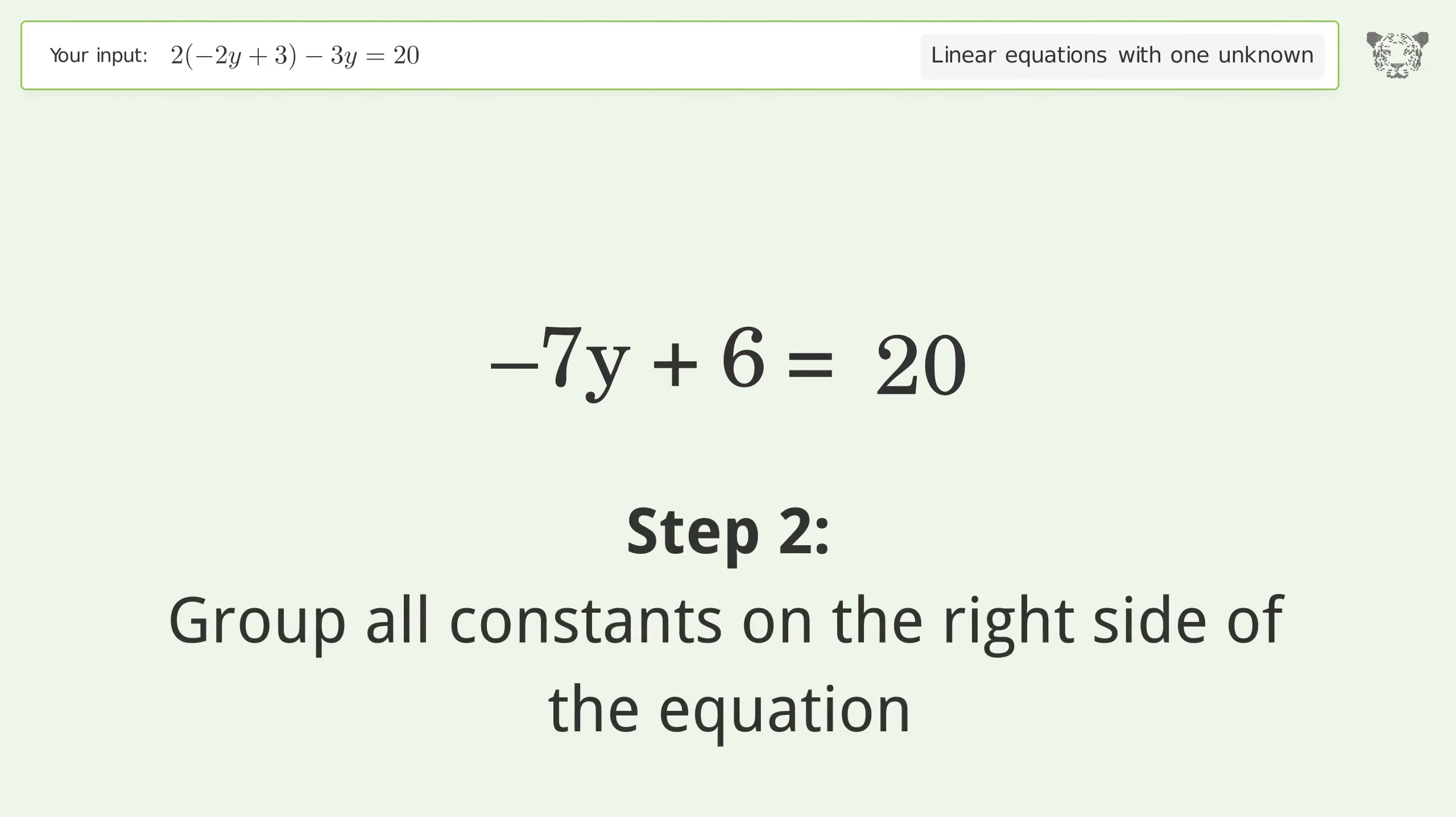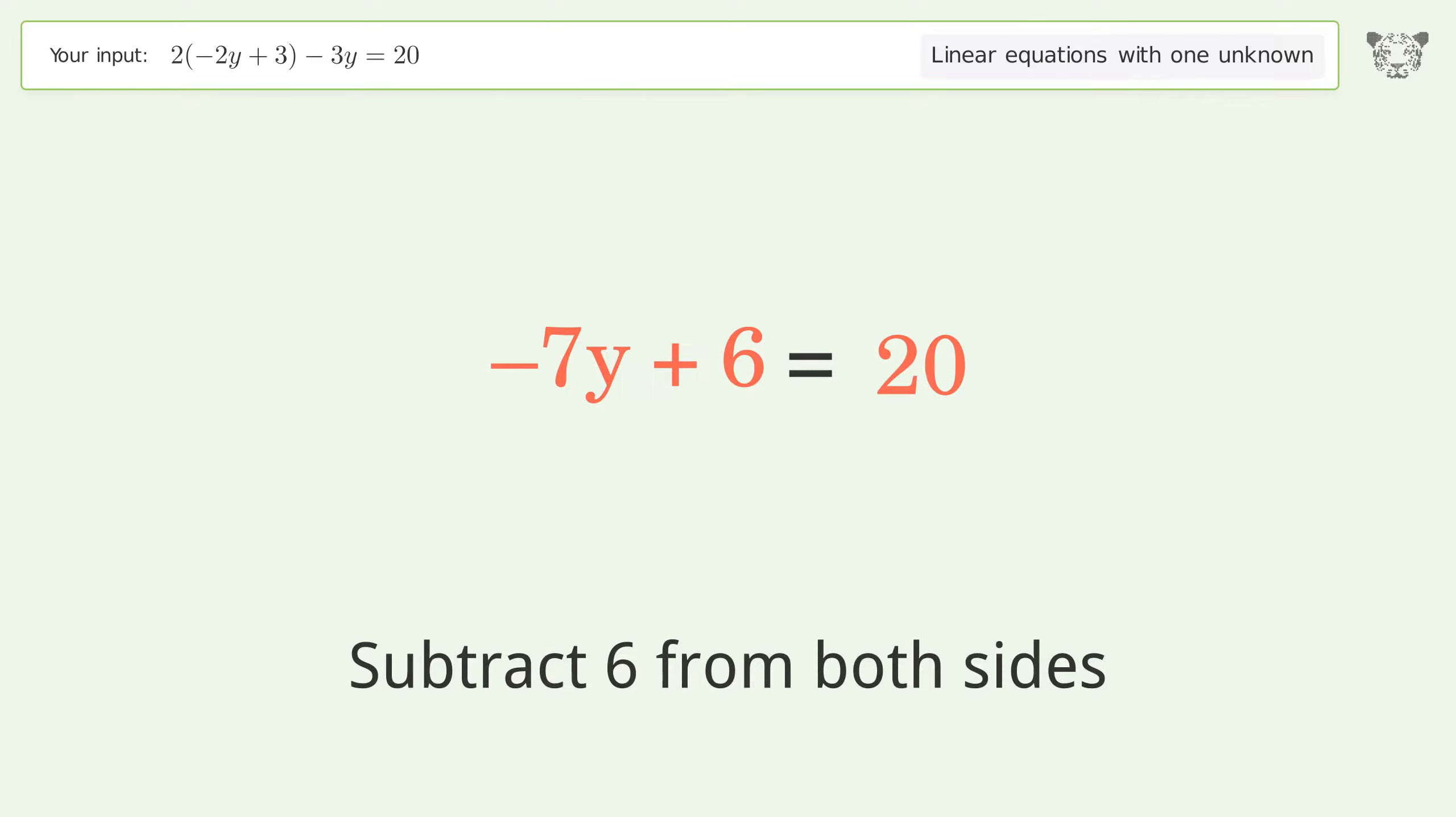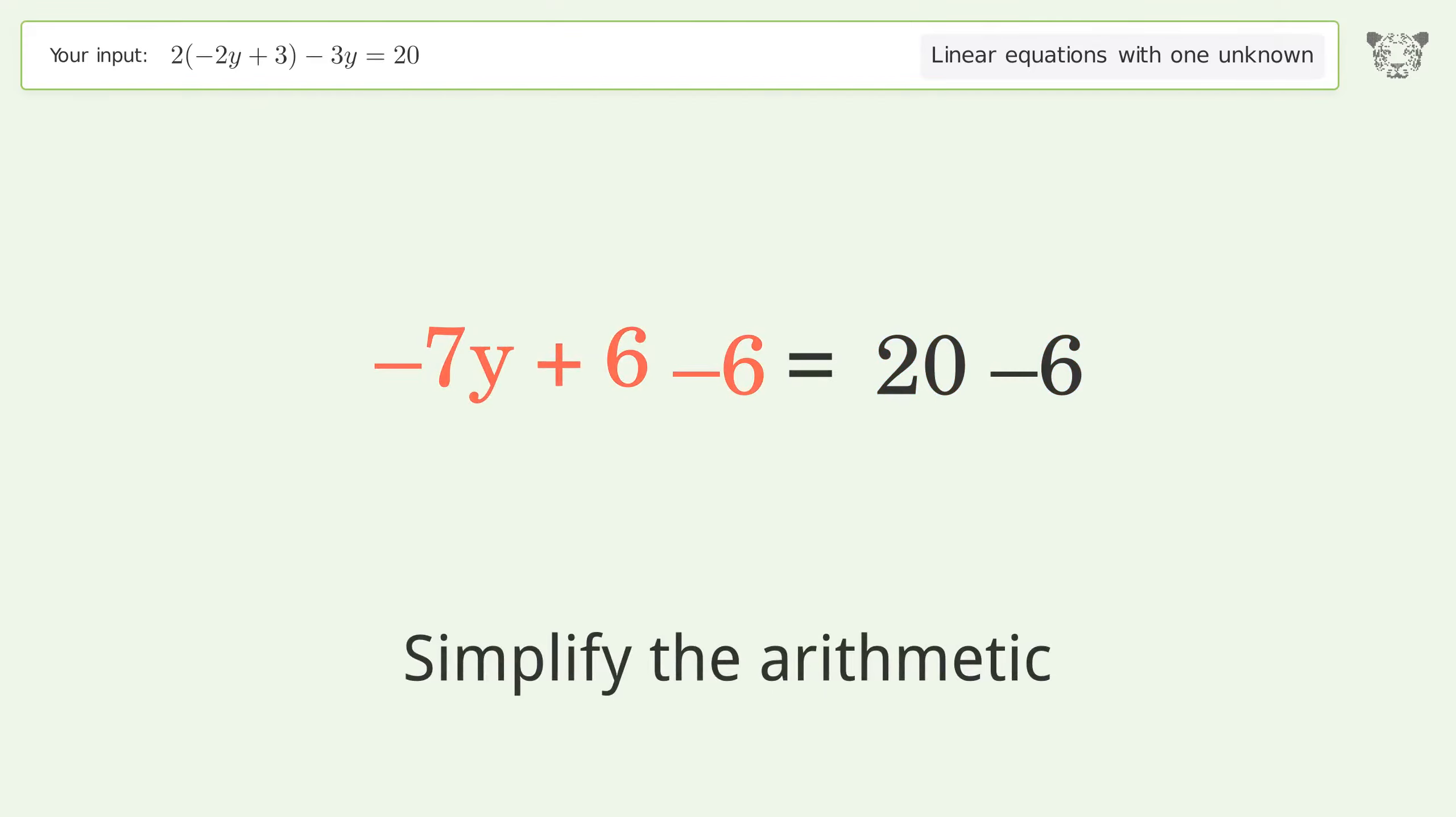Group all constants on the right side of the equation. Subtract 6 from both sides. Simplify the arithmetic.